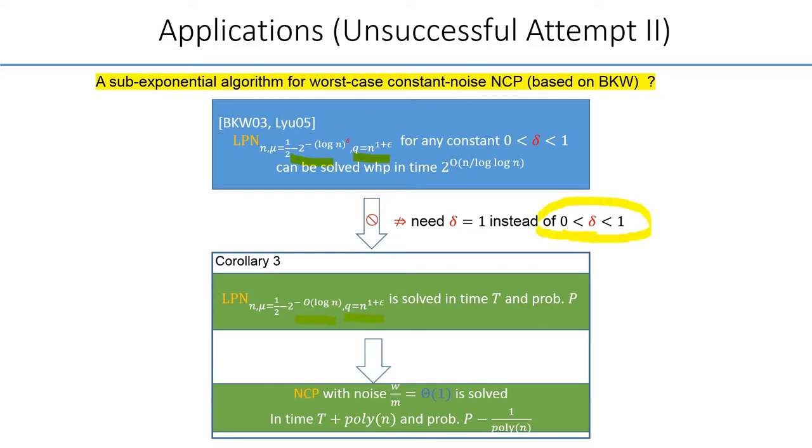In the above, the delta lies in between the open interval of 0 and 1. While in our corollary, the delta has to be 1. Next, we will present another cute result about reducing LWE to large-field LPN.